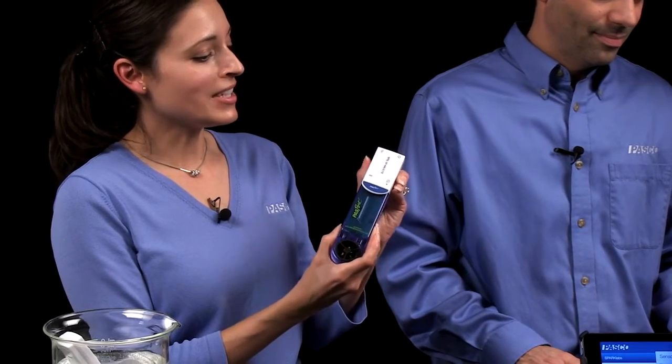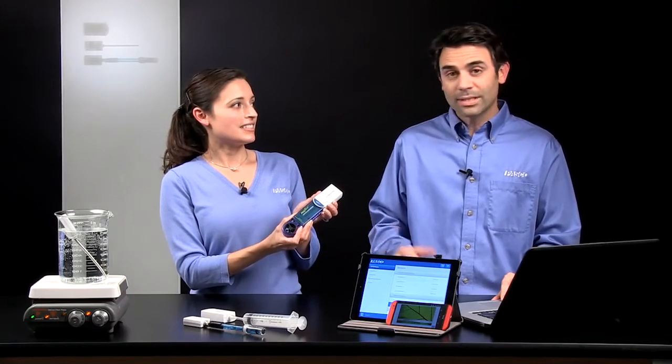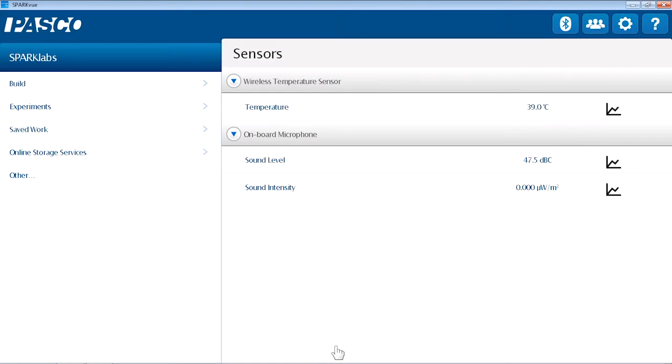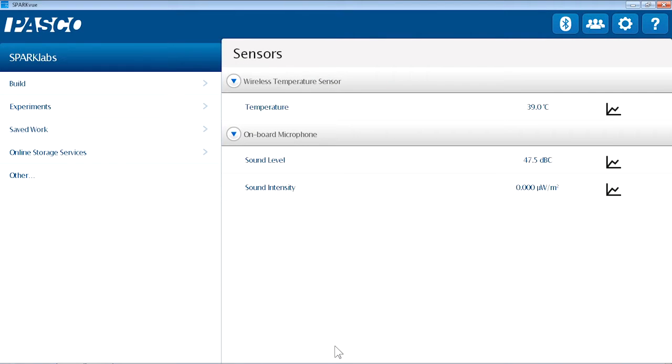We turn on the Air Link. And once that's on, just like I did before, I'll connect via that Bluetooth icon. And now I see the Air Link in my device list. If I touch on Air Link, it will connect to the Air Link. And on my home screen, I'll see all the measurements that are available with this multi-measure sensor.